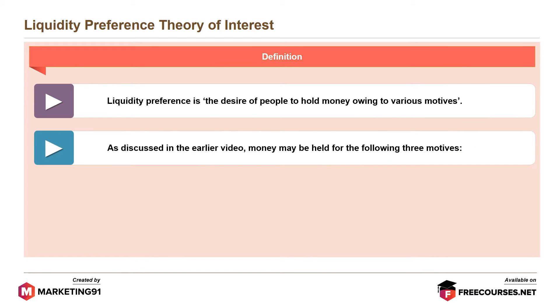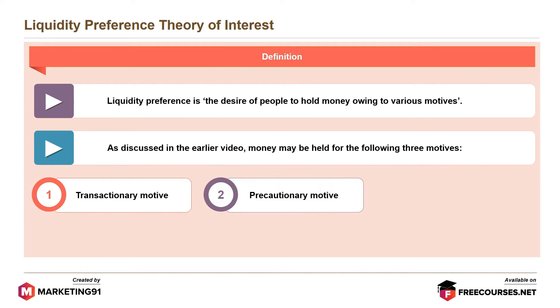As discussed in the earlier video, money may be held for the following three motives: transactionary motive, precautionary motive, and speculative motive.